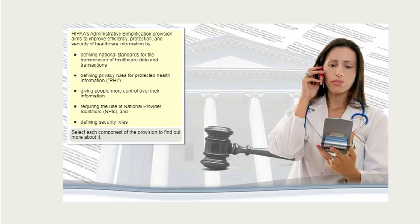HIPAA's Administrative Simplification Provision aims to improve efficiency, protection, and security of health care information by defining national standards for the transmission of health care data and transactions, defining privacy rules for protected health information (PHI), giving people more control over their information, requiring the use of national provider identifiers (NPIs), and defining security rules.